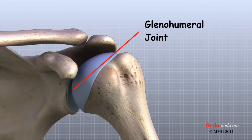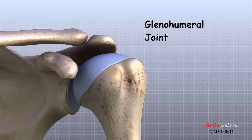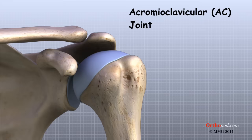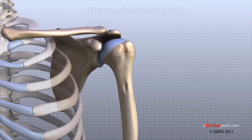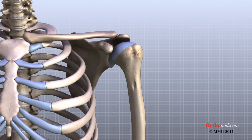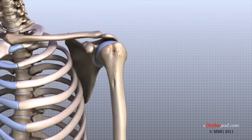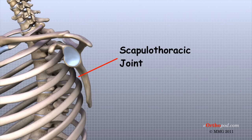There are actually four joints that make up the shoulder. The main shoulder joint, called the glenohumeral joint, is formed where the ball of the humerus fits into a shallow socket on the scapula. This shallow socket is called the glenoid. The acromioclavicular, or AC joint, is where the clavicle meets the acromion. The sternoclavicular, or SC joint, supports the connection of the arms and shoulders to the main skeleton on the front of the chest. A false joint is formed where the shoulder blade glides against the rib cage.